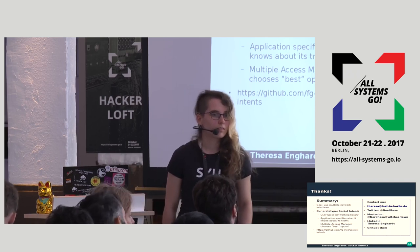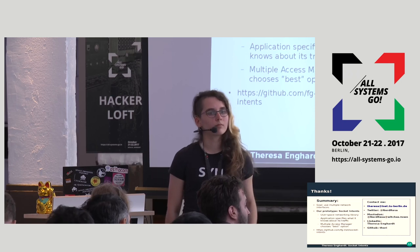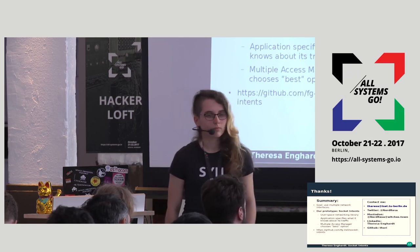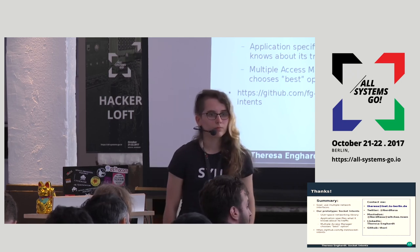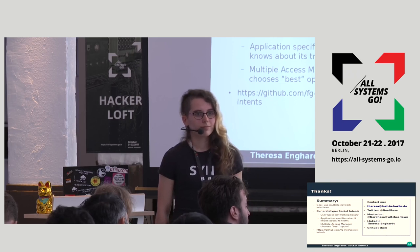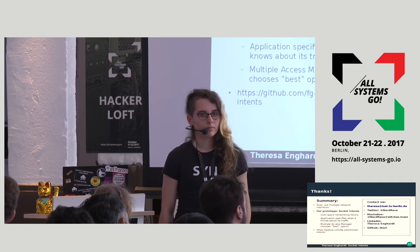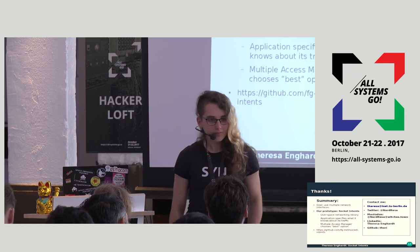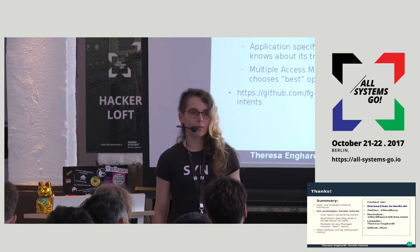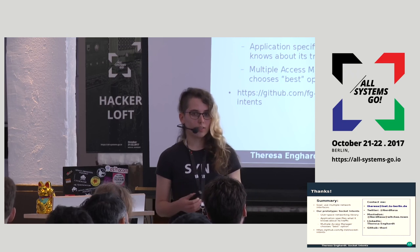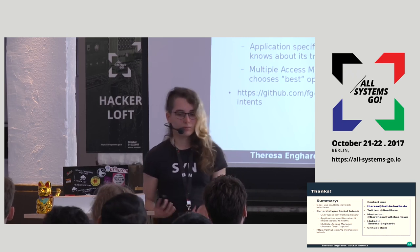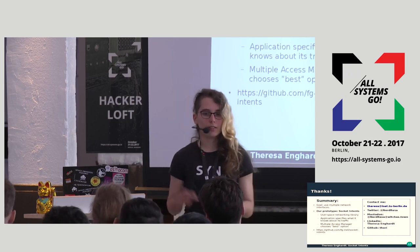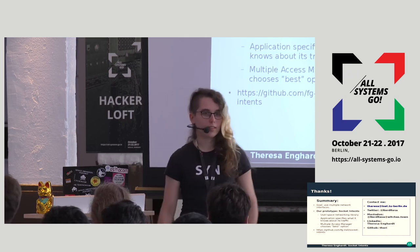Q: If you have many interfaces including OpenVPN pseudo-interfaces, is the library smart enough to use the right one — for example, not sending traffic over an unencrypted channel when a VPN is configured? A: Yes, in the policy you can configure which interfaces to consider at all. If you deem an interface insecure you simply exclude it. We don't have a security intent so far, but we could add one.